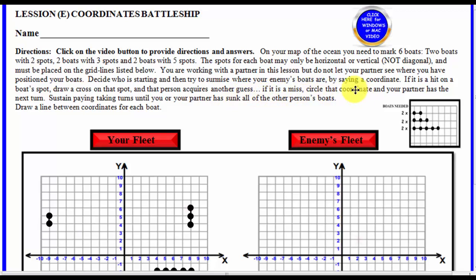If it is a miss, circle that coordinate, and your partner has the next turn. Sustain playing, taking turns until you or your partner has sunk all of the other person's boats. And don't forget to draw a line between the coordinates.